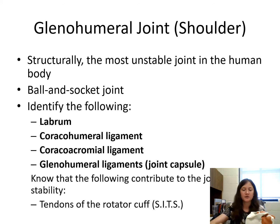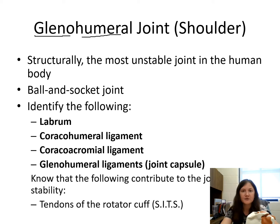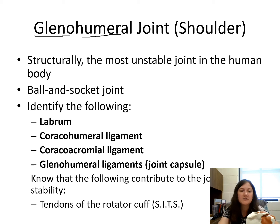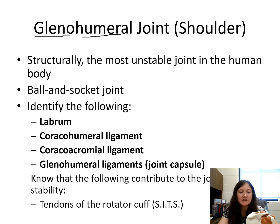Moving on to the glenohumeral joint — think glenoid cavity of the scapula and humerus, so this is the shoulder joint. Structurally, this is considered the most unstable joint in the human body. It is a ball and socket joint, with the ball being the head of the humerus and the socket being the glenoid cavity of the scapula. For this course, be familiar with the labrum, the coracohumeral ligament, the coracoacromial ligament, and the glenohumeral ligaments forming the joint capsule. The tendons of the rotator cuff muscles — supraspinatus, infraspinatus, teres minor, and subscapularis — contribute to joint stability.